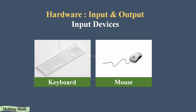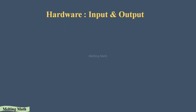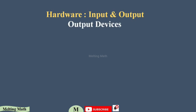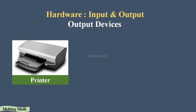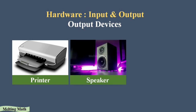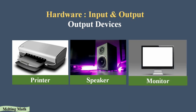Output devices are devices from which we get information out from the software. A printer is an output device because we print information on paper using it. A speaker is also an output device — we get sound from the computer through the speaker. A monitor is also an output device because the CPU gives the signal to the monitor to display information.